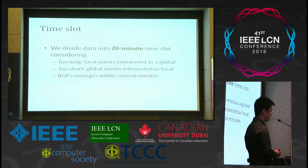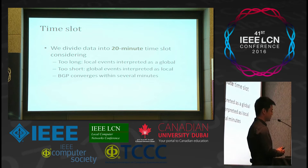We divide the data into 20-minute time slots. If the time slot is too long, local events may be incorrectly interpreted as global ones. If the slot is too short, global events may be interpreted as local ones. Considering that BGP converges within several minutes, we set the time slot to 20 minutes.